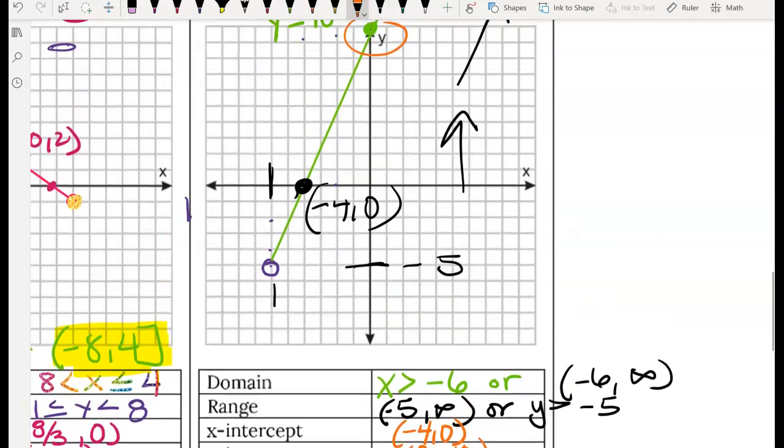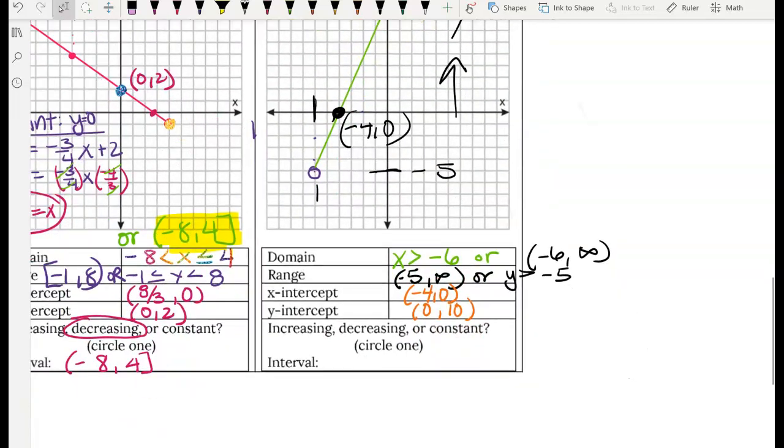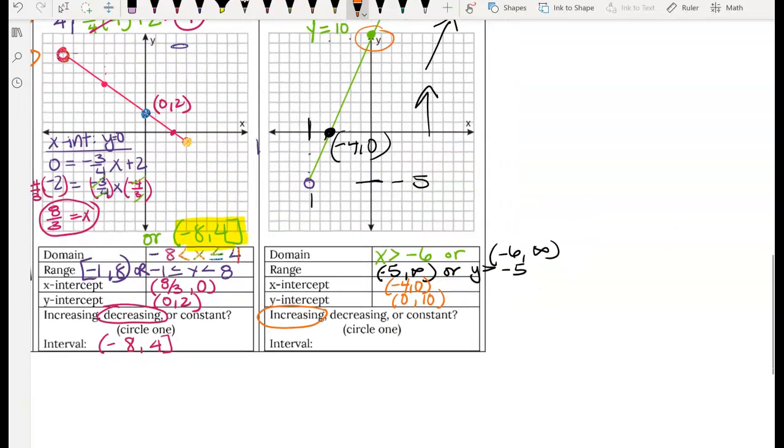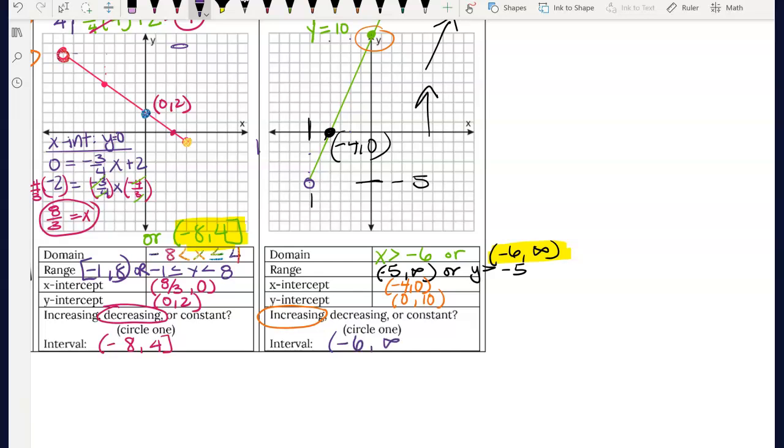The slope is positive because the line is going towards the right. Then that means it's increasing. And the interval of this increasing segment is the same as our interval notation for the domain because we only use x for increase, decrease, and constant. So it's going to say negative 6, comma infinity.